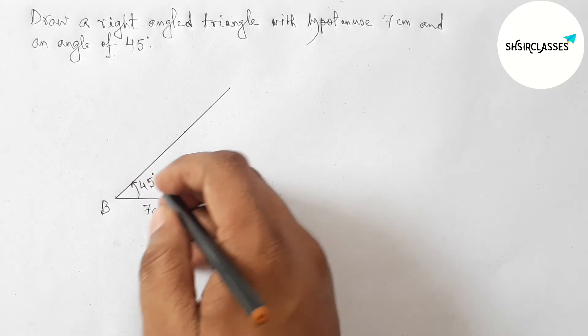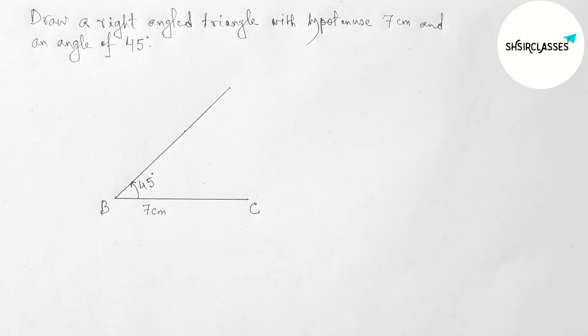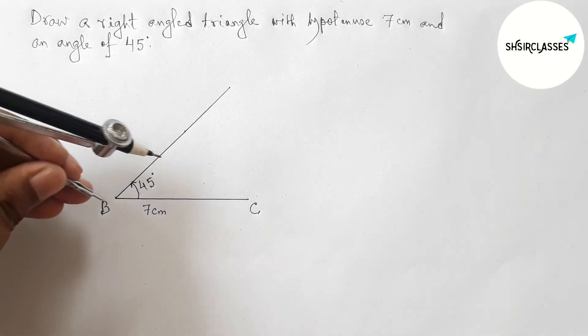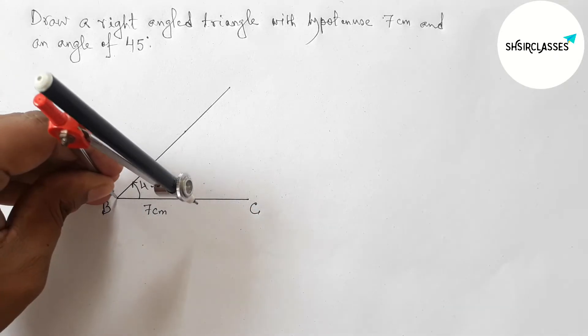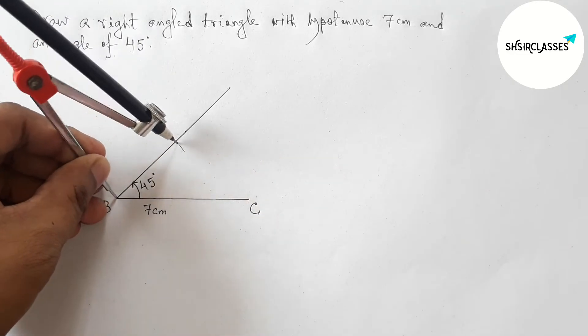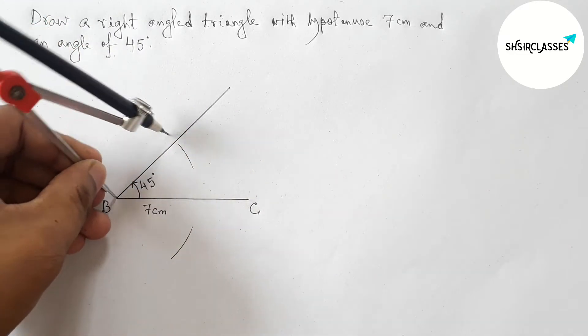So here this is a 45 degree angle. Next, by bisecting the line BC with the help of compass, so putting the compass on the point B and taking greater than half of BC and drawing arcs by this way.